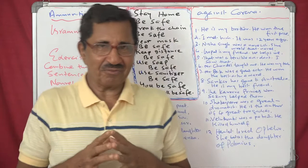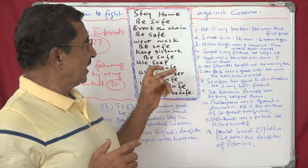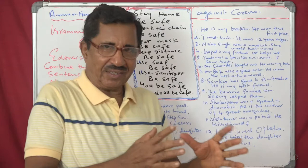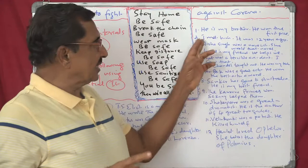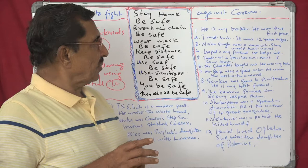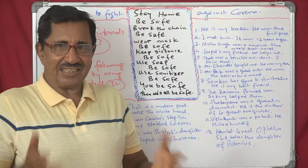For example: 'He is my brother. He won the first prize.' If you use 'it is', it becomes: 'It is my brother who won the first prize.' So when you say 'It is my brother who won the first prize,' it is a single sentence. You can cut it into two and it becomes cleft sentences. So you can convert or combine these two sentences.